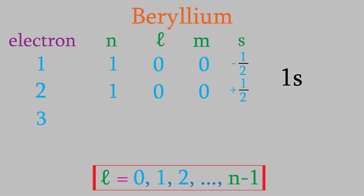This means the third electron must have n=2. For l, the value must be between 0 and n−1, so since n=2, l must be either 0 or 1. The electron wants the lowest energy, so l=0, placing it in a 2s orbital, with m=0. Electron four is in the same situation: n=2, l=0, m=0. For these last two electrons we don't know the value of s, but we know they are opposite in sign — we'll say the first is negative half and the second is positive half.